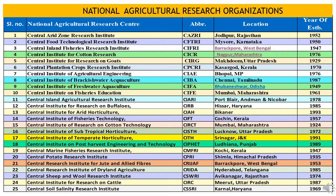Eighteenth is CIPHET — Central Institute of Post-Harvest Engineering and Technology — headquartered at Ludhiana, Punjab, started in 1989. Nineteenth is CMFRI — Central Marine Fisheries Research Institute — headquartered at Kochi, Kerala, started in 1947. Twentieth is CPRI — Central Potato Research Institute — headquartered at Shimla, Himachal Pradesh, started in 1935. Twenty-first is CRJAF — Central Research Institute for Jute and Allied Fibres — headquartered at Barrackpore, West Bengal, established in 1953. Twenty-second is CRIDA — Central Research Institute of Dryland Agriculture — headquartered at Hyderabad, Telangana, started in 1985.